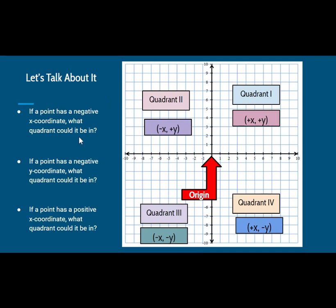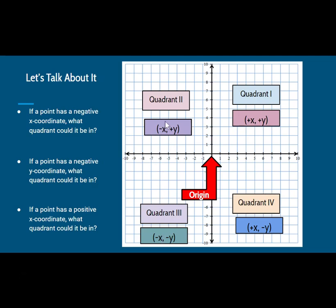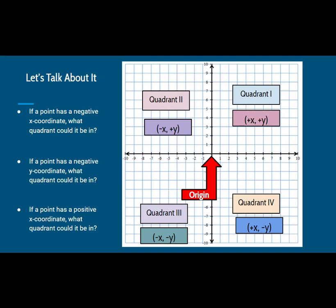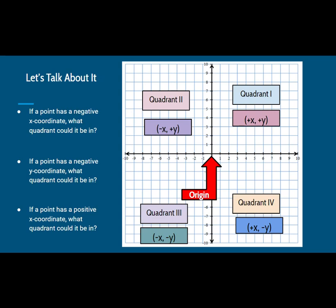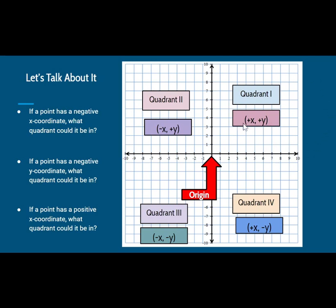Let's answer these questions. If a point has a negative x-coordinate, what quadrant could it be in? Pause the video and see if you can figure that out. Looking at our x-coordinates, it could be in Quadrant 2 or Quadrant 3. If a point has a negative y-coordinate, what quadrant could it be in? It could be in Quadrant 3 or Quadrant 4. If a point has a positive x-coordinate, what quadrant could it be in? Positive x-coordinates fall to the right of the origin, so it could be Quadrant 1 or Quadrant 4.